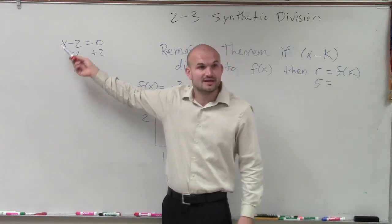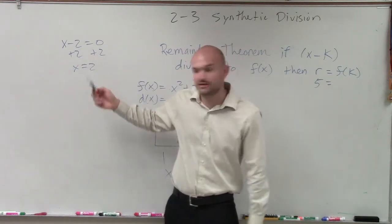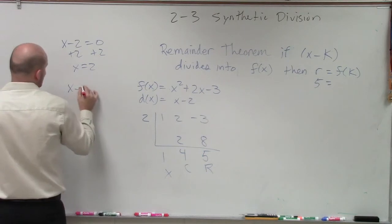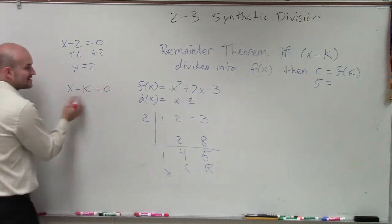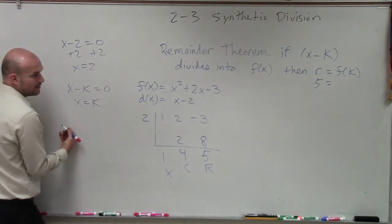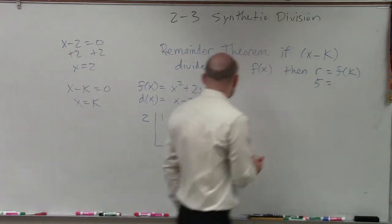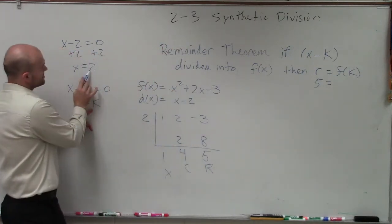So we're going to say this is our factor. If this evenly divides, it's a factor. But if it's a factor, then this is our 0. So if I have x minus k, that's it in factored form. x equals k is it in 0. So now what I need to do is I need to figure out my k is 2.